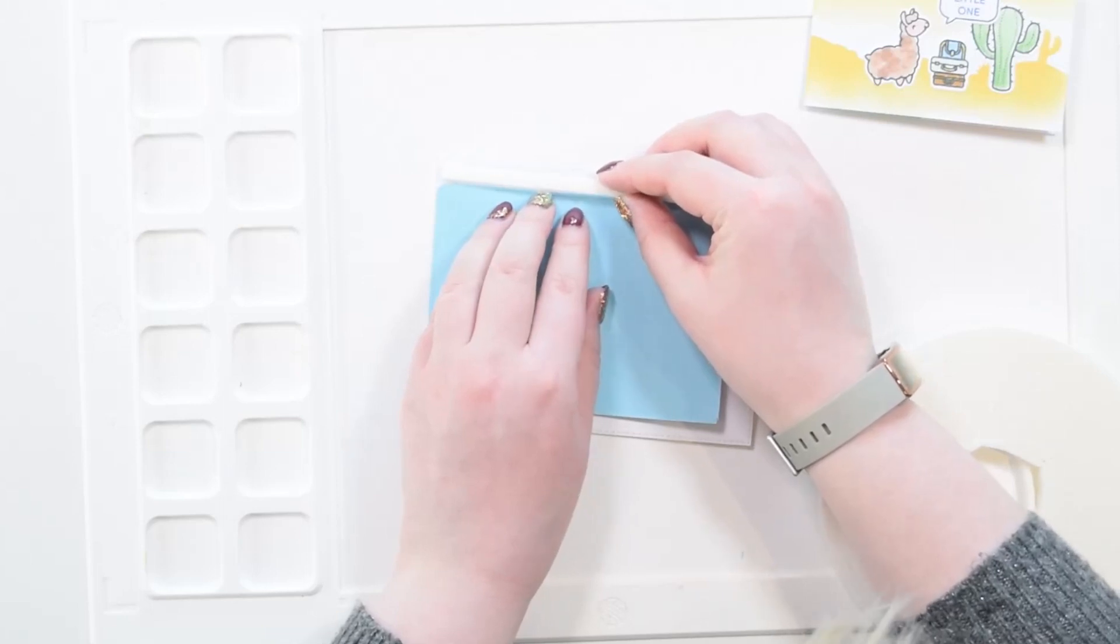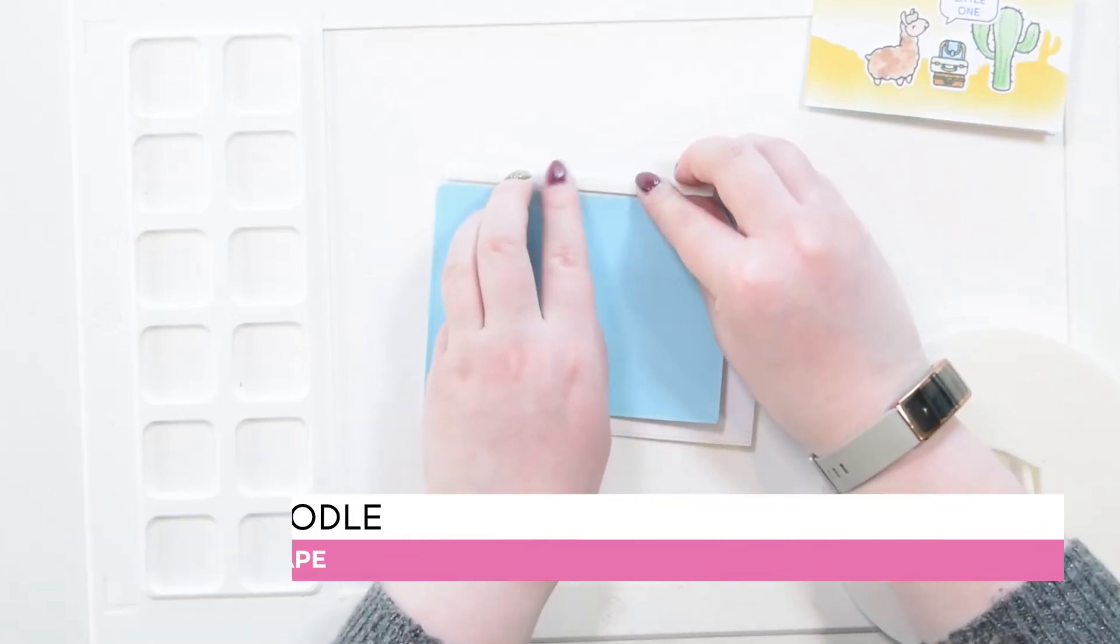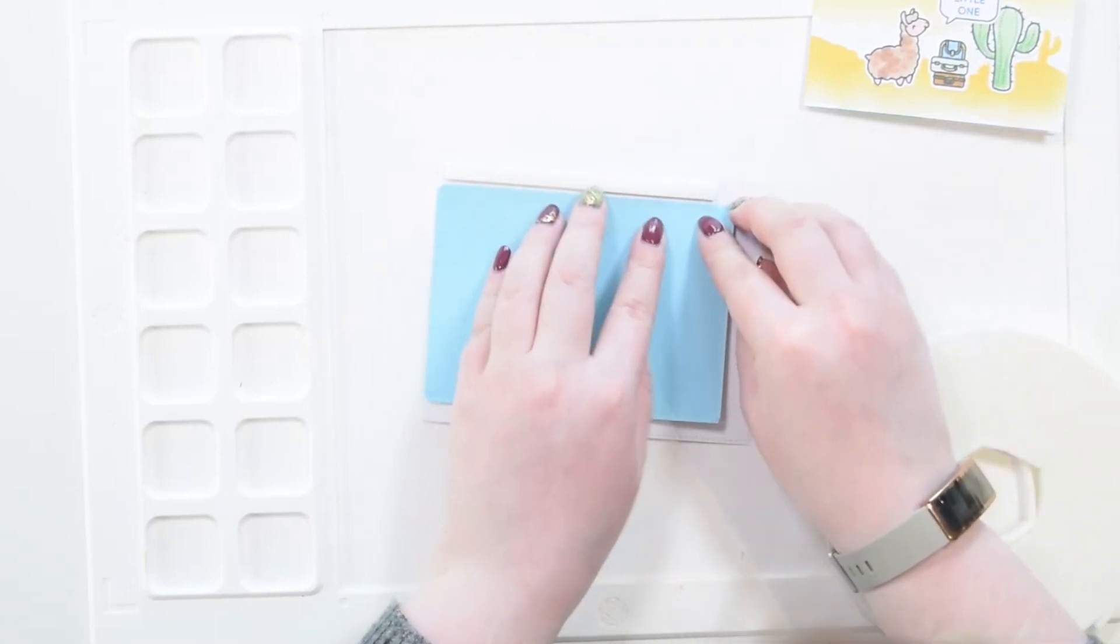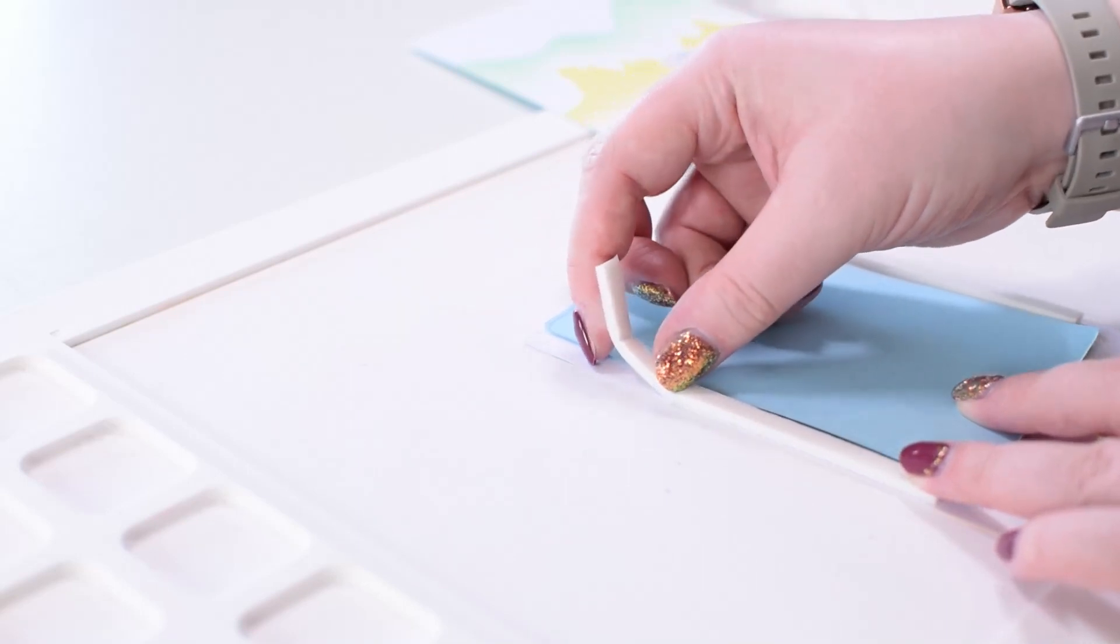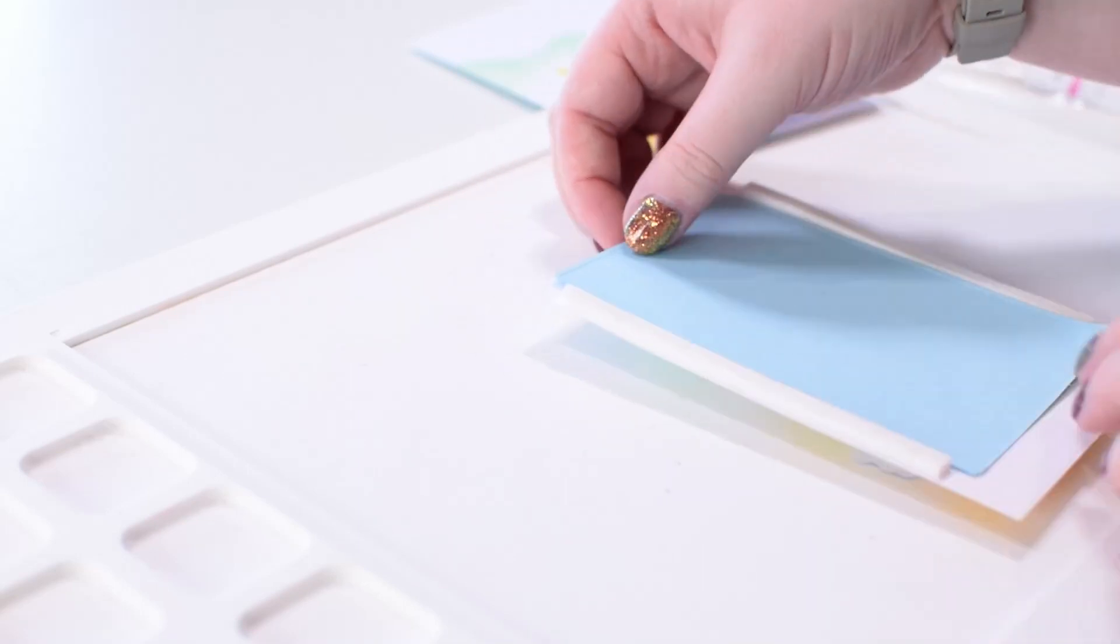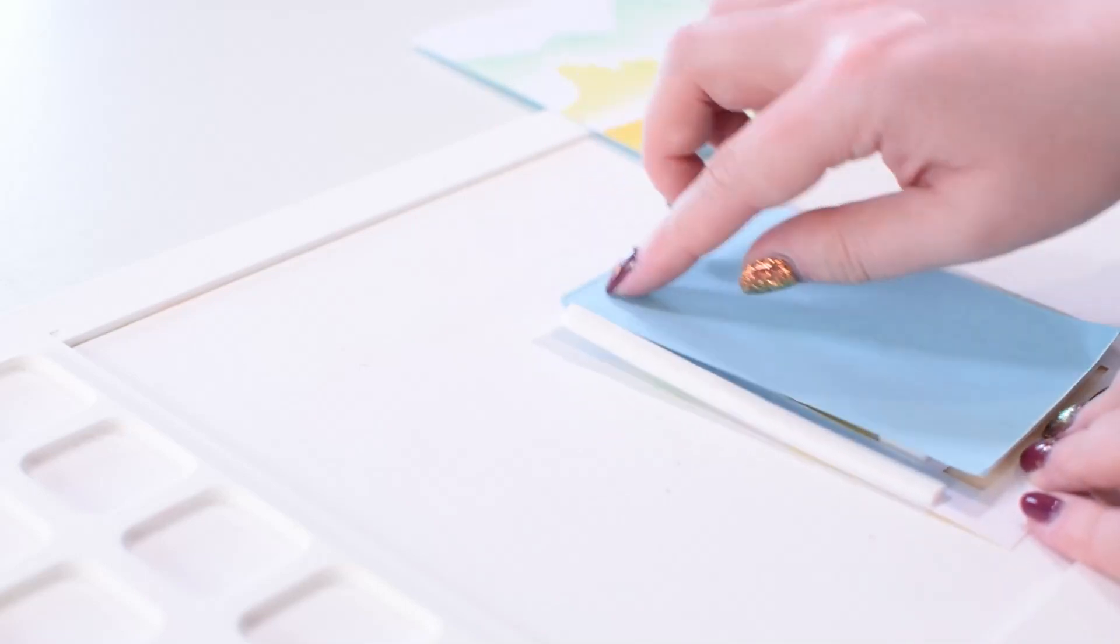Next up, I'm taking some Heffy Doodle five millimeter foam tape and attaching that on the long sides of this card panel. This creates a nice little channel for the pull tab to sit in so it won't go wonky, and it will keep your mechanism working well and as it should. You want to be really careful to get these nice and straight so your mechanism works as well as it should.